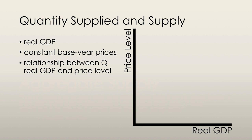Aggregate supply is the relationship between the quantity of real GDP supplied and the price level. When we look at aggregate supply and aggregate demand, we're going to be comparing the price level on the y-axis with real GDP on the x-axis.